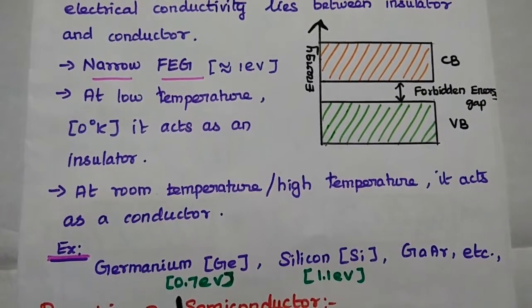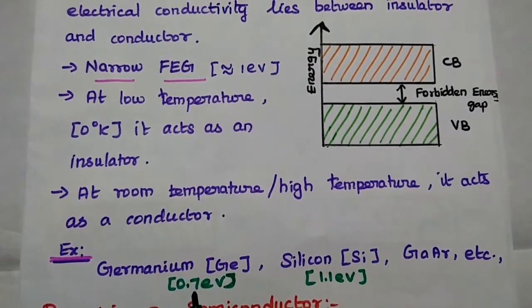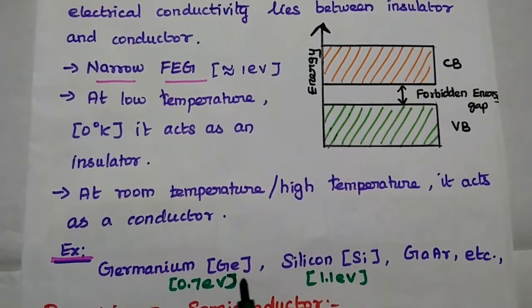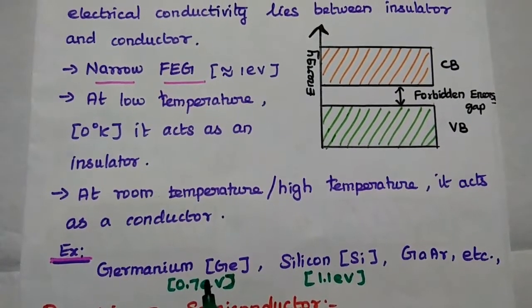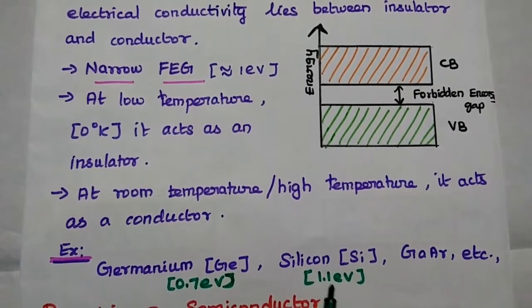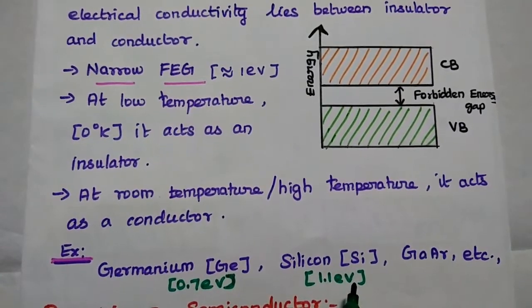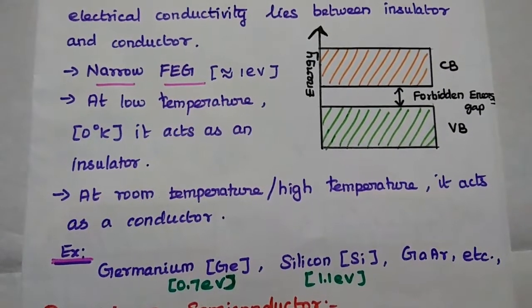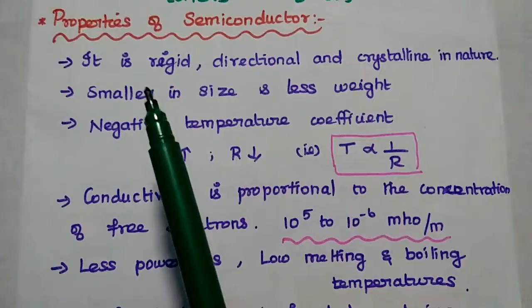Here, 0.7 electron volts is the cut-in voltage or forbidden energy gap value for germanium. Similarly, 1.1 electron volts is the value for silicon. You have to remember these two values.